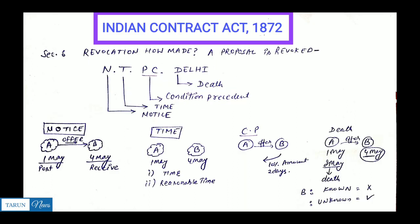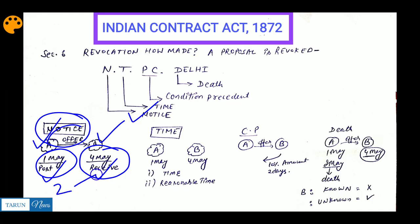First, let's discuss Notice. Say person A sends an offer letter to person B. A posts it on the 1st, and B receives it on the 4th. When B receives this offer letter, it has already been sent. Now, suppose A sends a revocation letter on the 2nd. A can send it, but there is a time period for this, which we discussed in the last video.